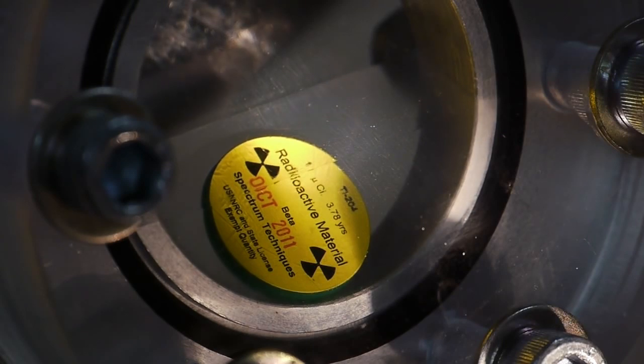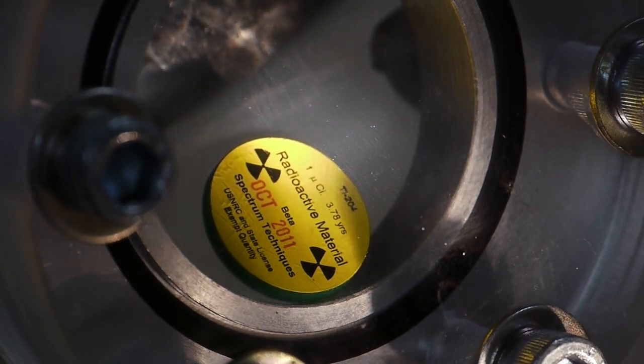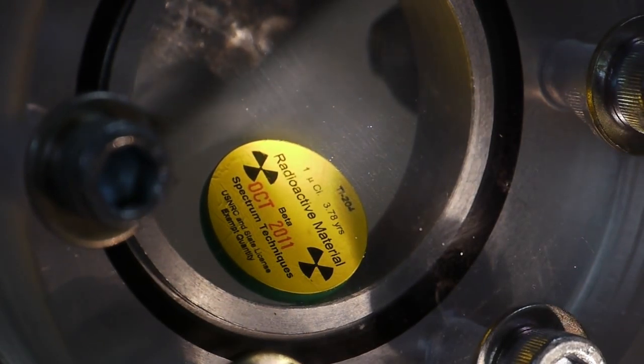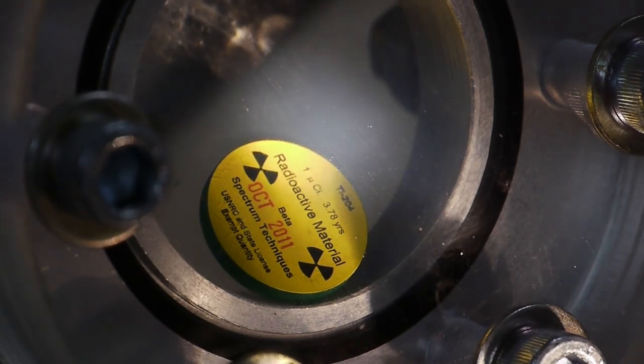Originally I used an americium source out of a smoke detector, which is an alpha emitter, and someone very helpfully pointed out on my blog that alpha particles are very big and slow moving, and the path length in a fluid as dense as supercritical CO2 is really not going to be that long.